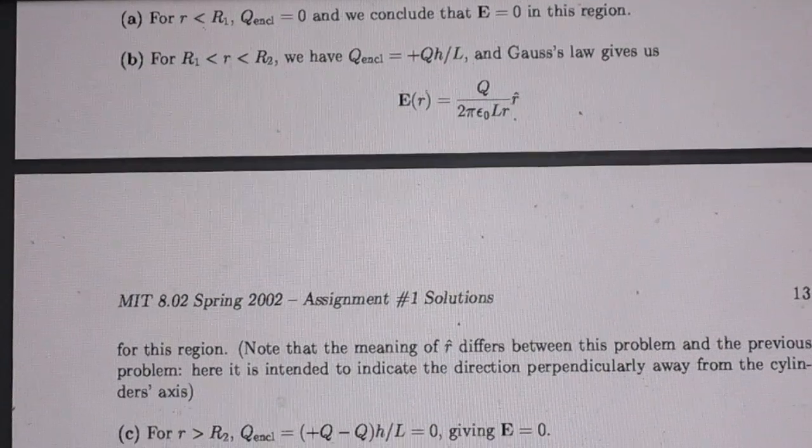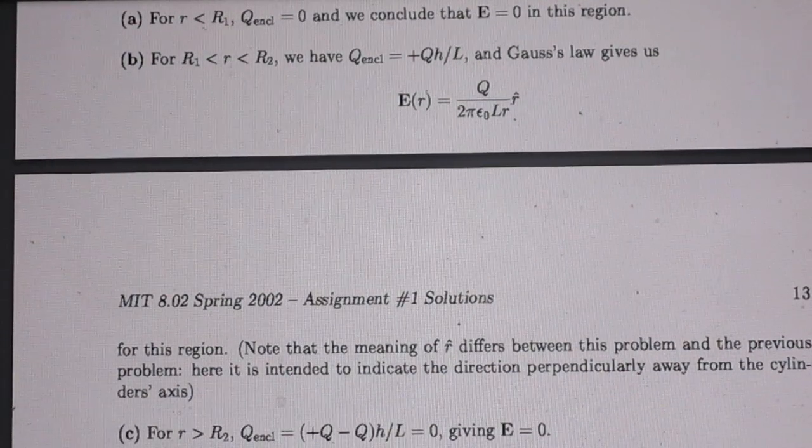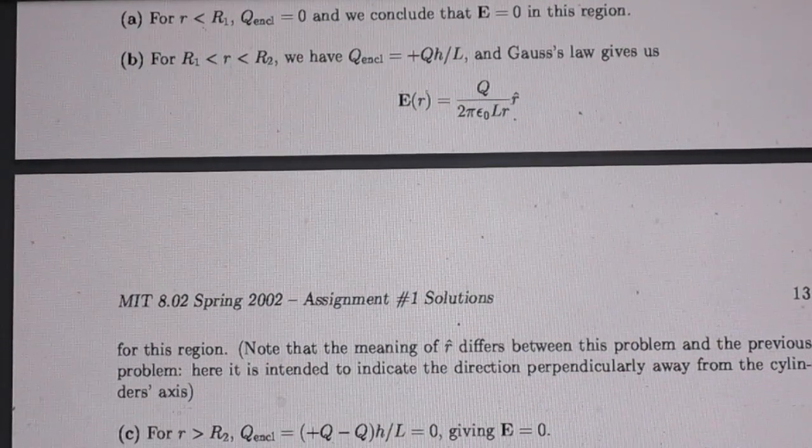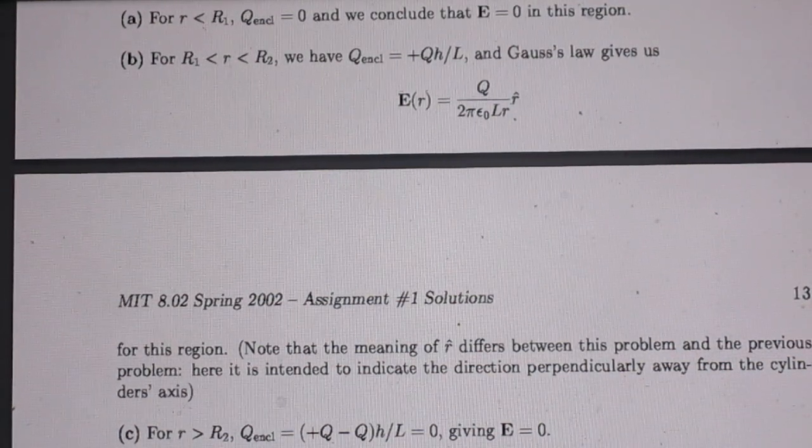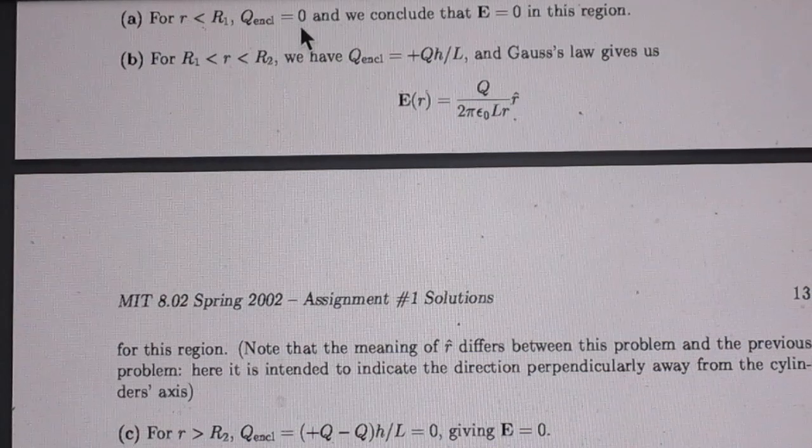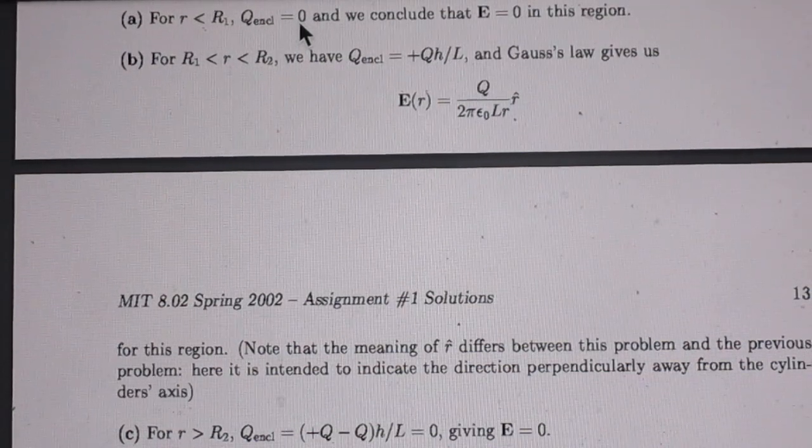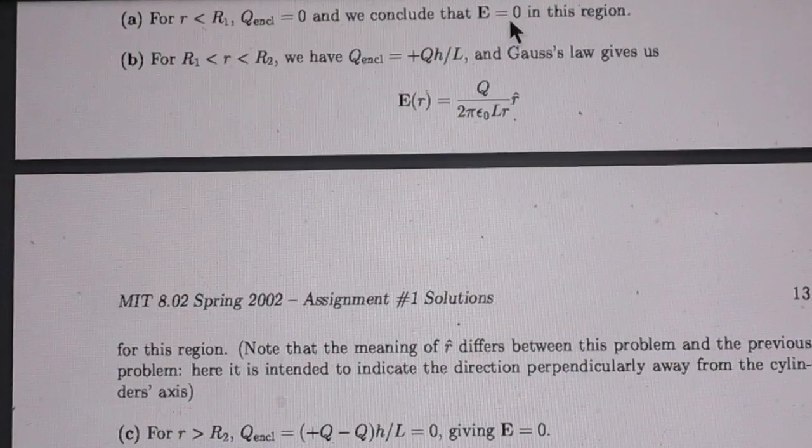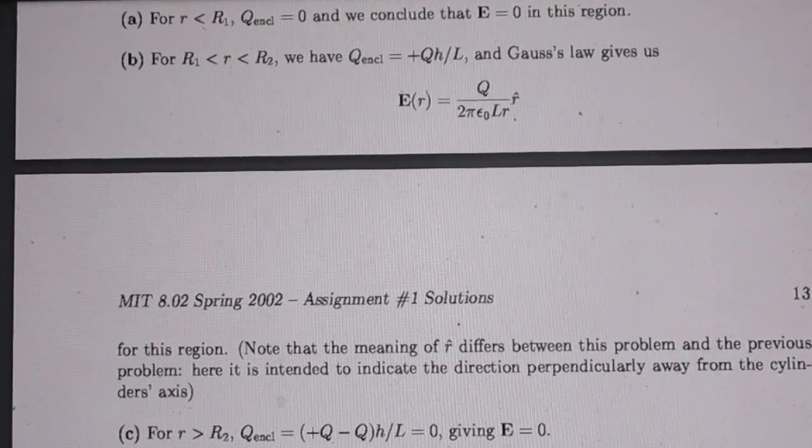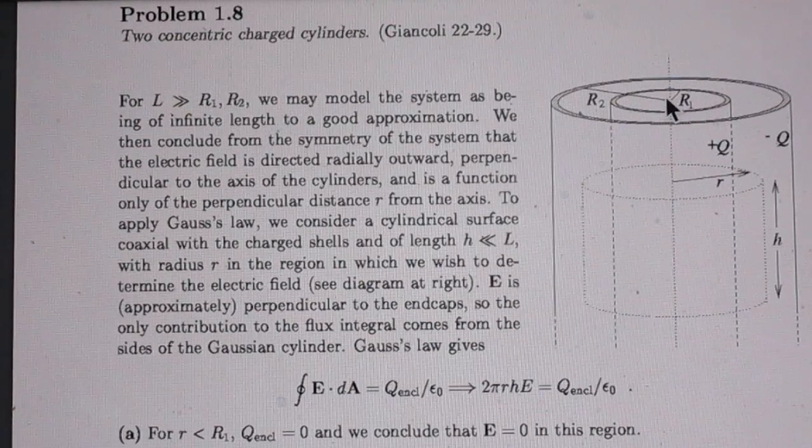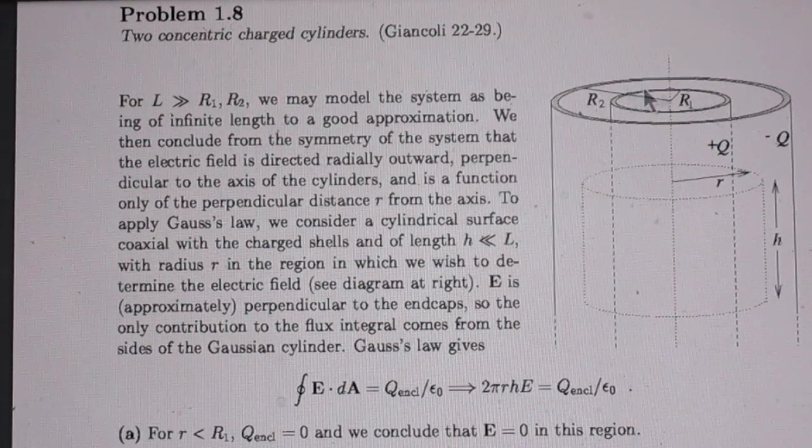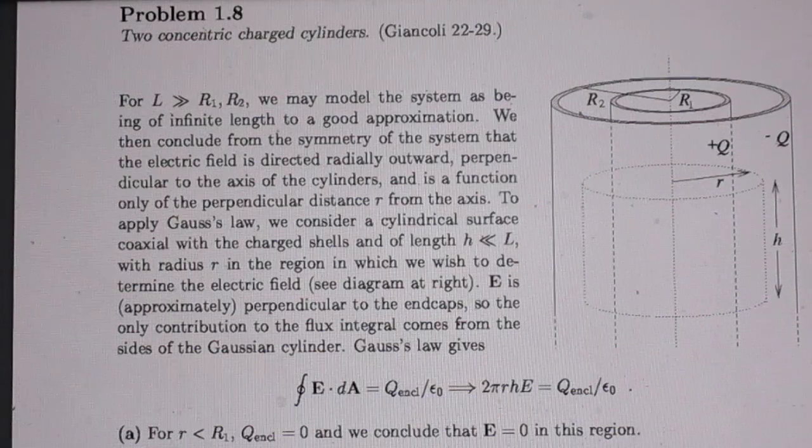Now we go to the first question, when small r is smaller than R1. Well that's very easy, of course there is no charge inside that inner cylinder, so the electric field everywhere is zero. So the electric field anywhere inside this inner cylinder is zero.